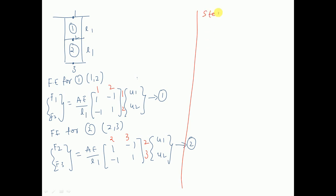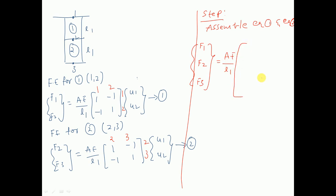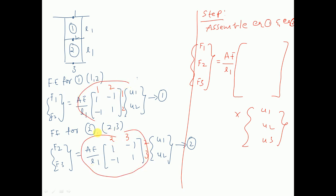The next step is to assemble equation one and equation two. We write {f1, f2, f3} = (AE/l1) × [global stiffness matrix] × {u1, u2, u3}. We have to assemble the two element stiffness matrices to form this global stiffness matrix.